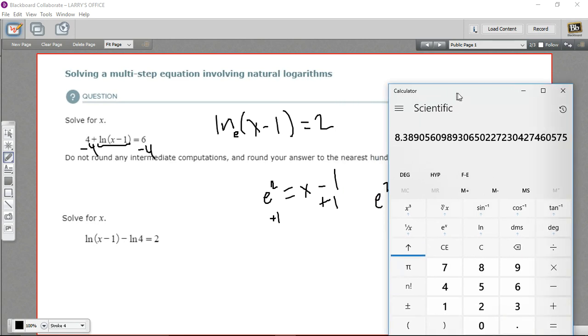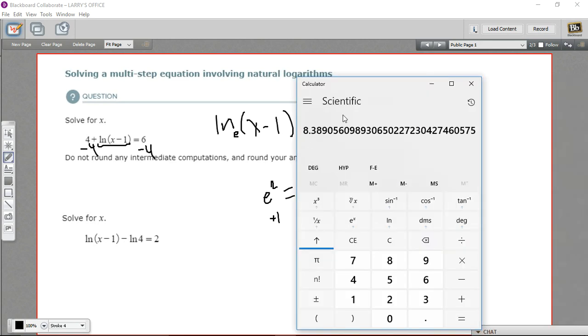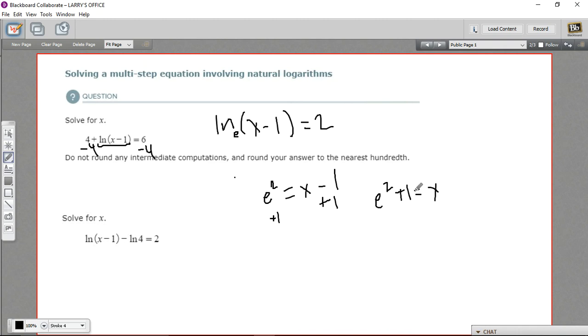And our instructions say to round to the nearest hundredths, so this would be 8.39. So x equals 8.39.